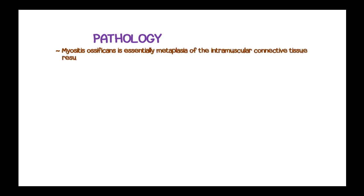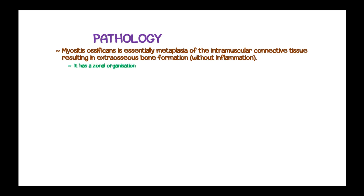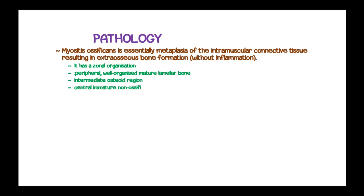Myositis ossificans is essentially a metaplasia of the intramuscular connective tissue resulting in extra-osseous bone formation without inflammation. It has a zonal organization with three zones: the peripheral zone of well-organized mature lamellar bone, an intermediate osteoid region, and the central immature non-ossified cellular focus of fibroblasts.